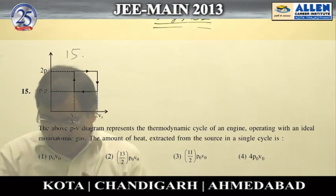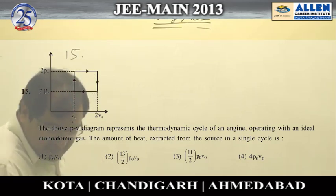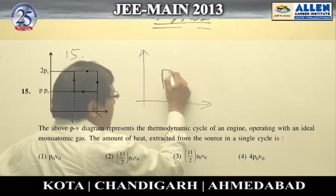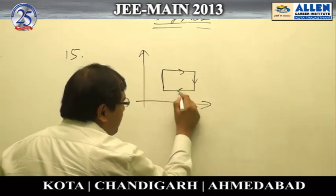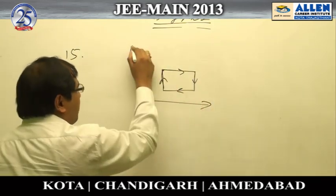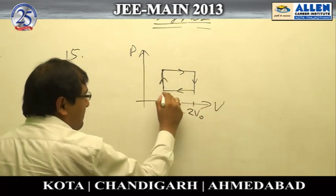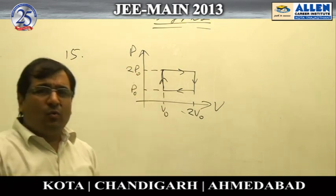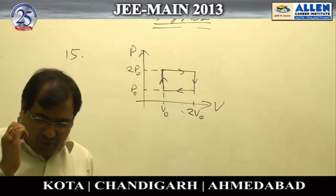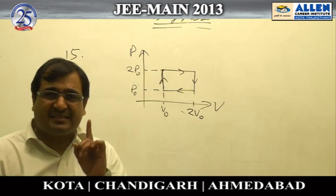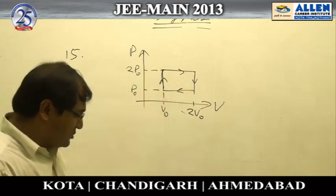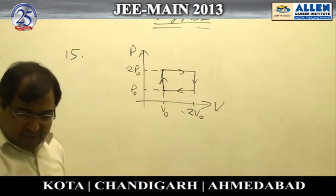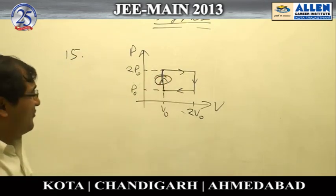Solution to question number 50 — it's a very simple question on thermodynamics. A PV diagram is given, and what is being asked is the heat extracted from the source. The heat extracted from the source is the heat being supplied to the system.